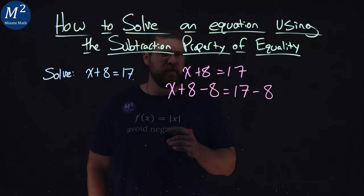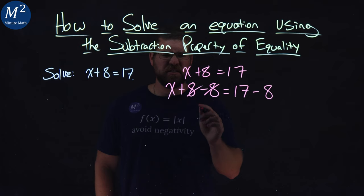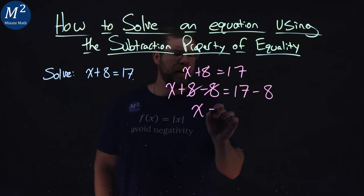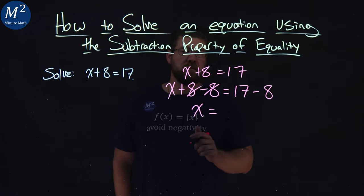The left-hand side is pretty easy. 8 minus 8 cancels out. That's just 0, right? So we have x by itself. Now 17 minus 8 gives me a 9.